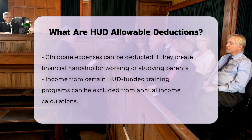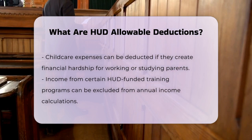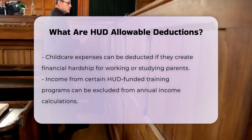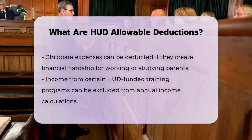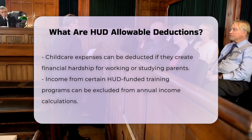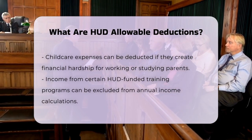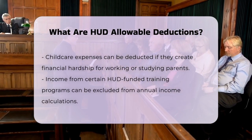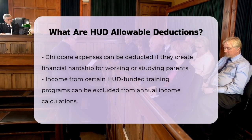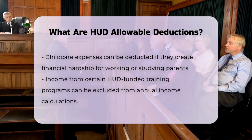In addition, if a family member is participating in certain training programs funded by HUD or other qualifying federal, state, tribal, or local employment training programs, the income earned from these programs can be excluded from the family's annual income. This includes on-the-job training or apprenticeships.